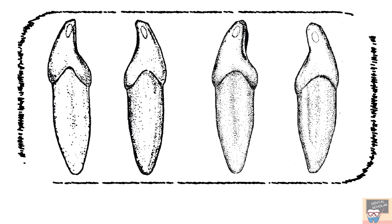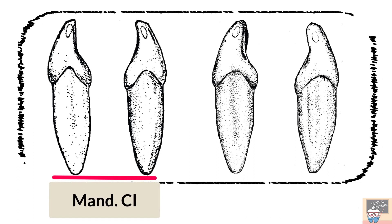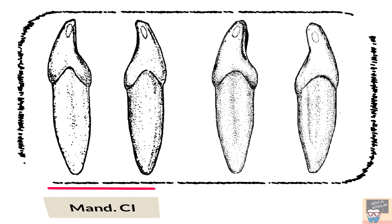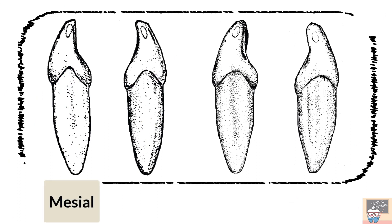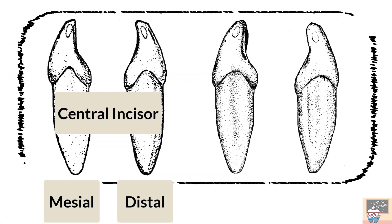Now let's see the mandibular incisors. The first two teeth appear almost identical, and this is a feature unique to the mandibular central incisor since it is a symmetrical tooth, except for the curvature of the cervical line. When you compare the curvature of the cervical line, you will realize that it is more prominent on the mesial side than the distal side. So this is the only feature which will help you distinguish the mesial view from the distal view. So the first tooth is the mesial view of the mandibular central incisor and the second tooth is the distal view of the mandibular central incisor.